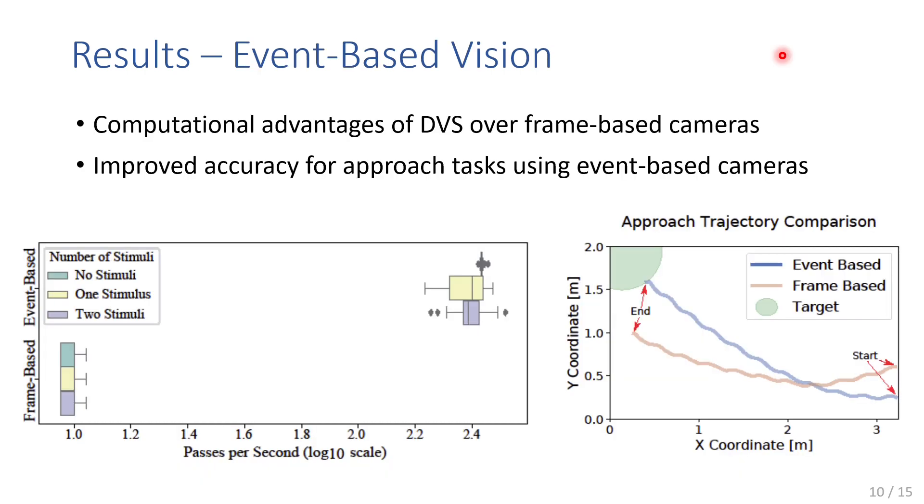With a baseline in place for our controller using frame-based sensors, we then moved to investigate performance when driven by event-based cameras. We compared the differences brought about using the two different sensor types, both computationally and in terms of the robot's performance.